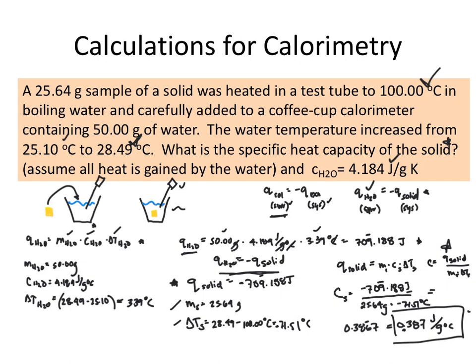This is how you progress through these problems. I could have given you any variable to solve for — it didn't have to be C. I could have provided C and asked about the change in temperature, or provided delta T and C and asked for the mass of the solid. You could be asked to solve for anything in these problems, so make sure you use your relationships and show your work.